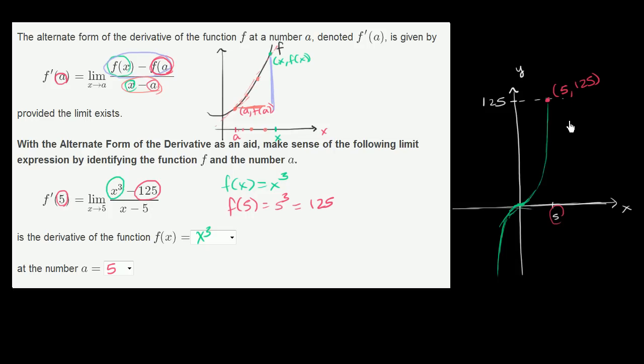And then we're taking the slope between that point and an arbitrary x value, an arbitrary other point on the curve. So this right over here would be the point x comma x to the third. We know that f of x is equal to x to the third. This is a graph of y is equal to x to the third.